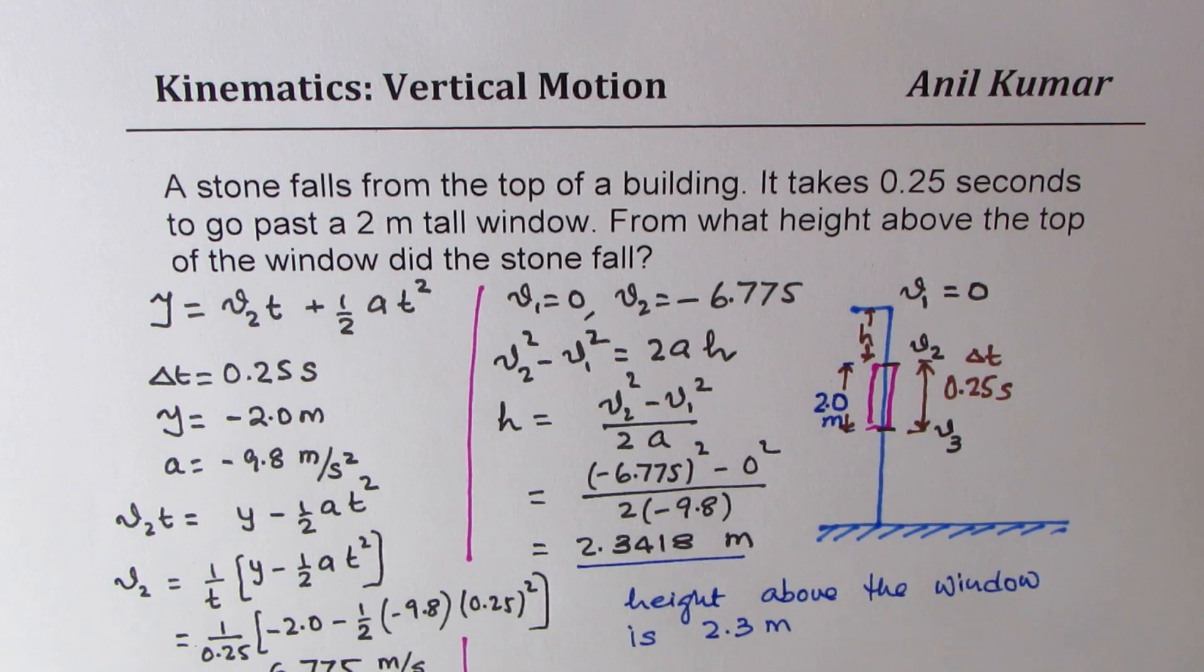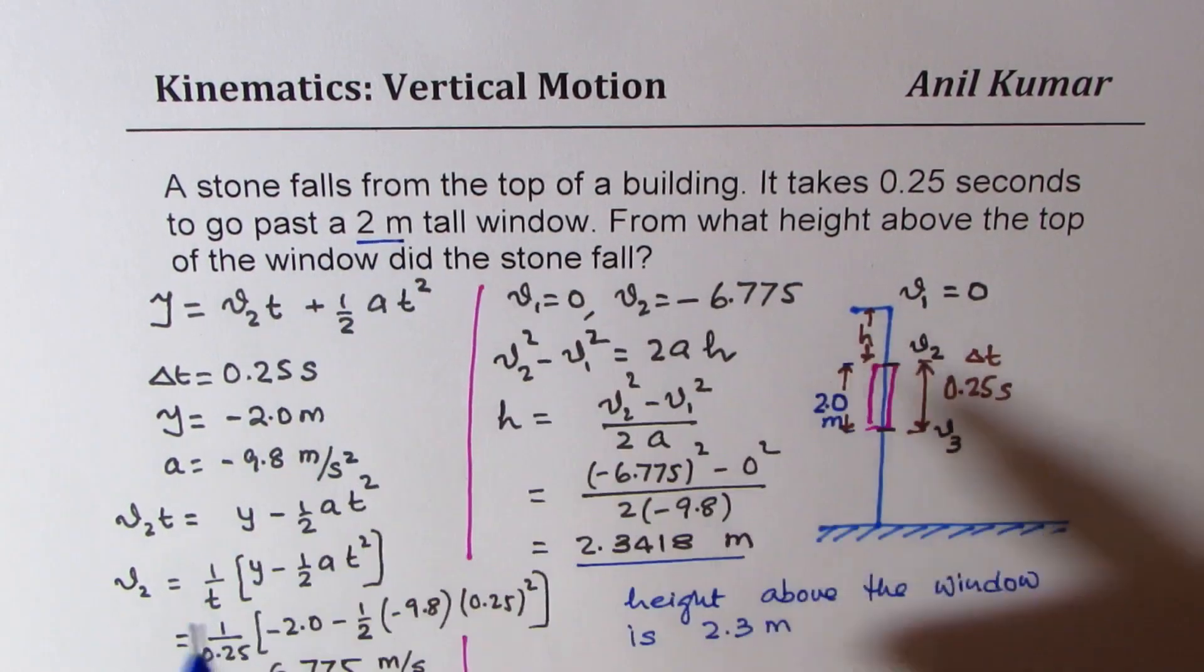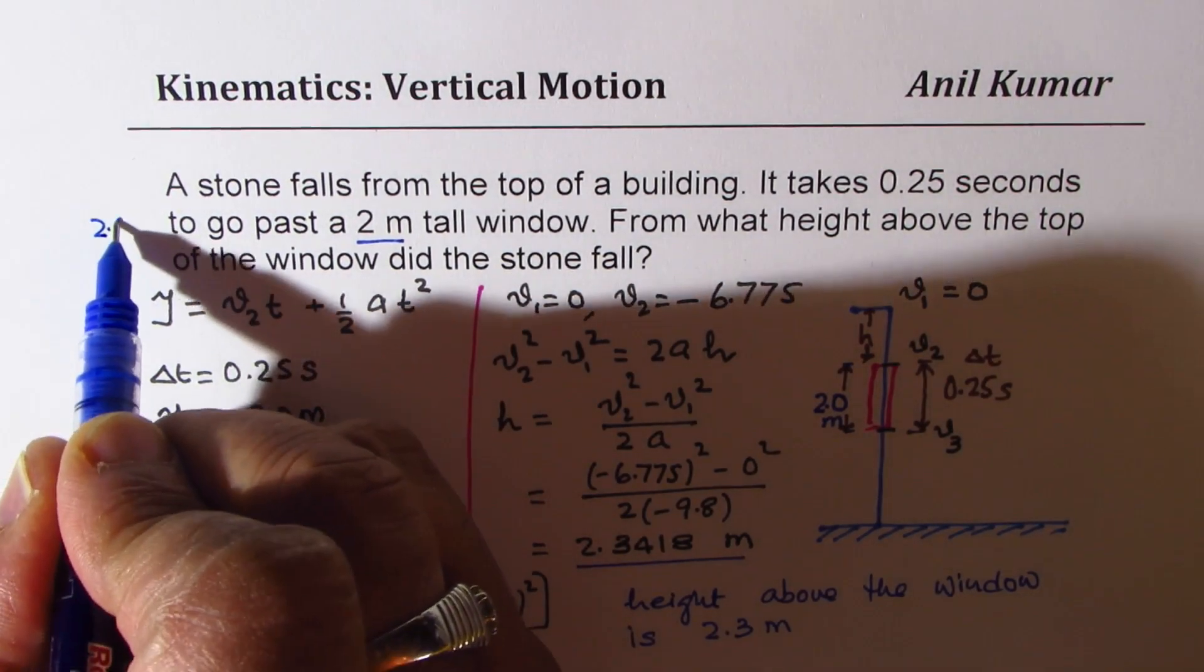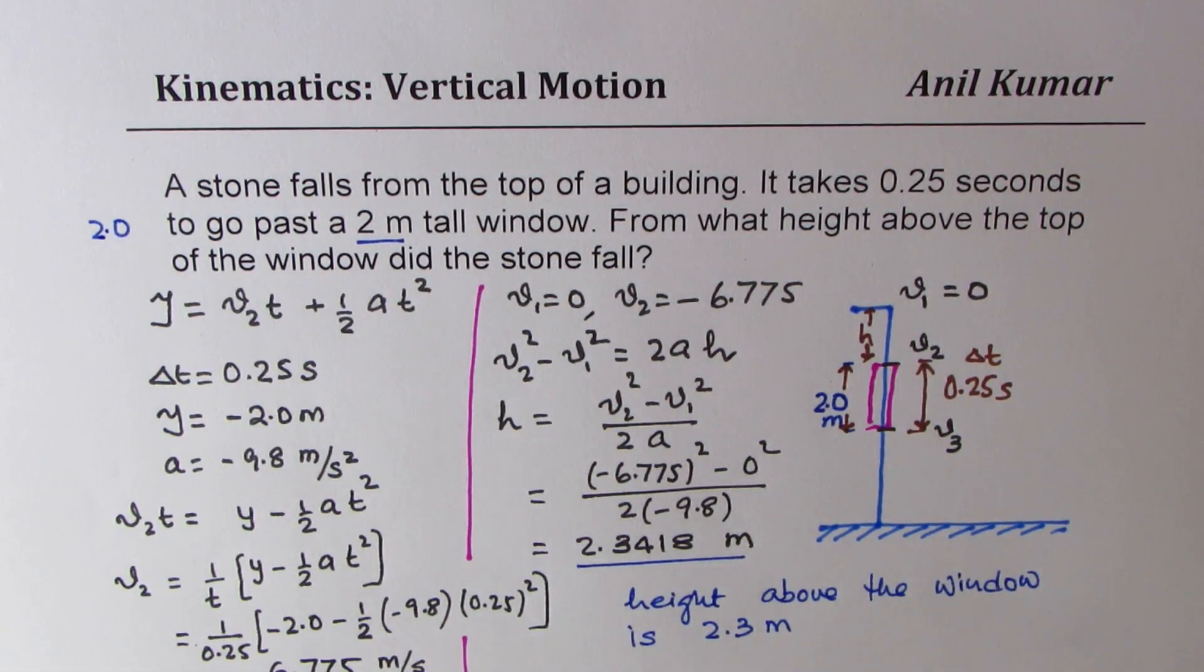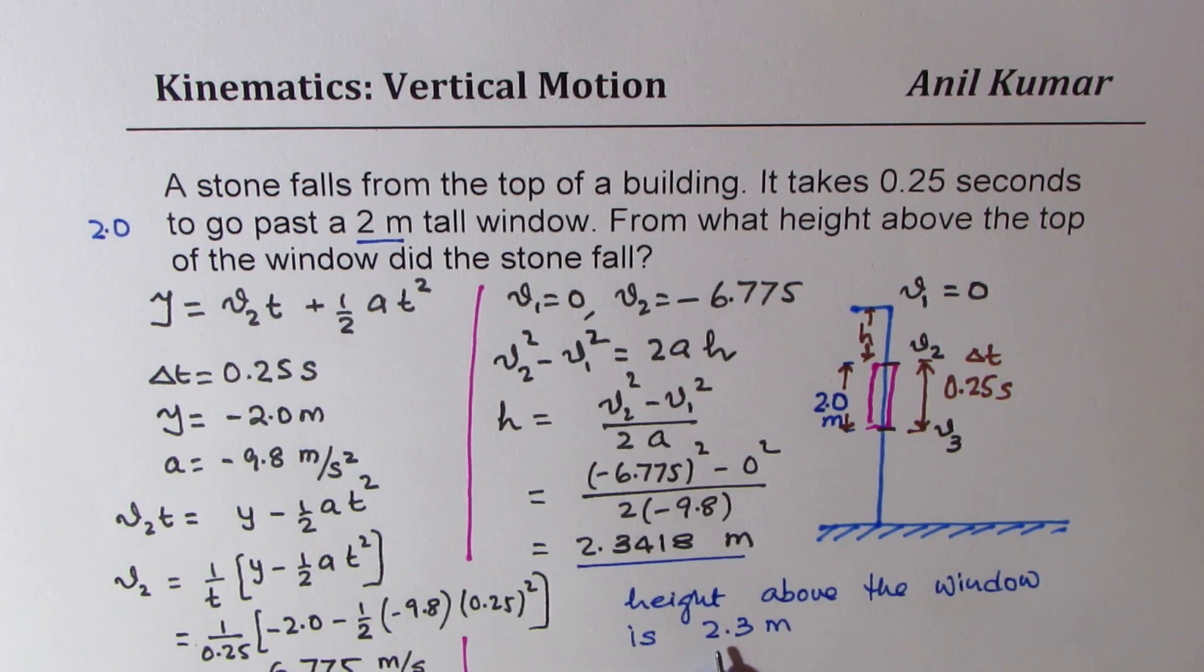I hope the steps are absolutely clear. One change which I definitely made was writing this as 2.0 just because that helped me give two decimal places. If the question has two, the answer will be two meters.